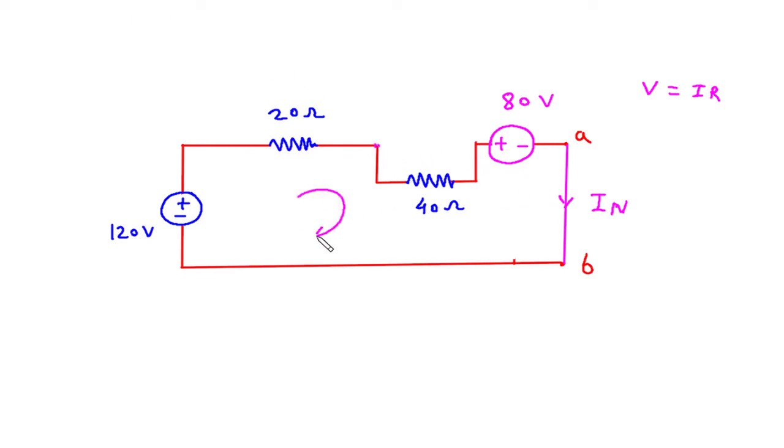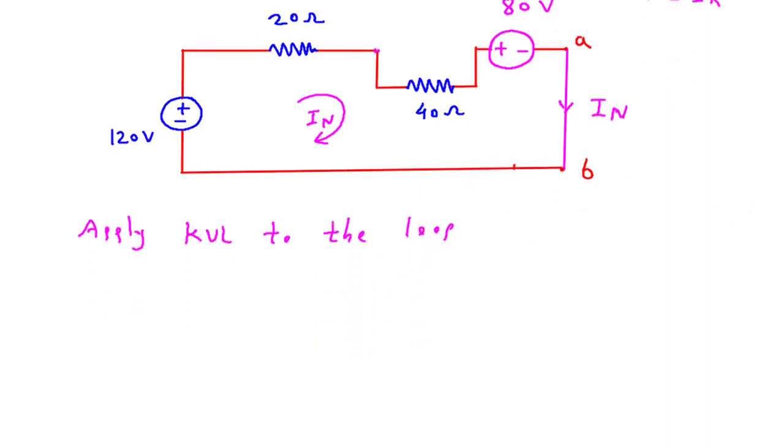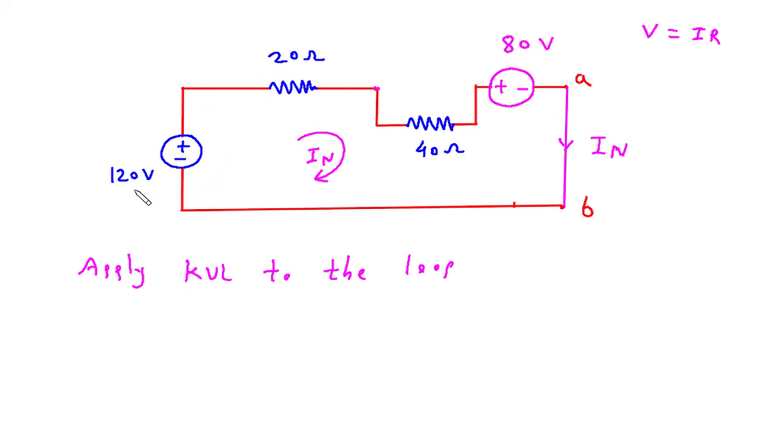Now here we can apply KVL. This is current IN, apply KVL to the loop. We will start from here. So this will be minus 120. Then this will be plus, minus, plus, minus. We will add these directly. So 20 plus 40 will be 60, plus 60 IN. Then plus 80 is equal to 0.